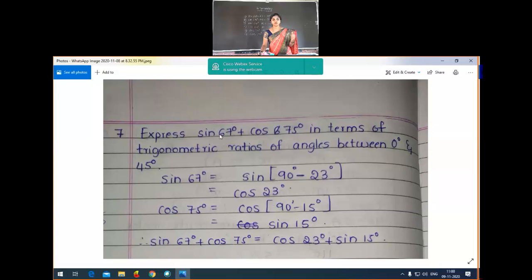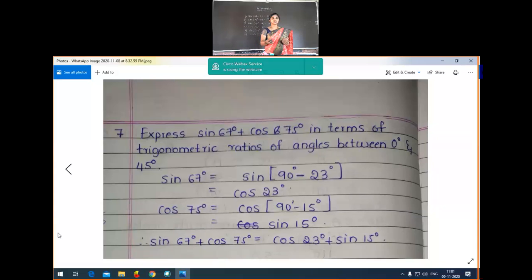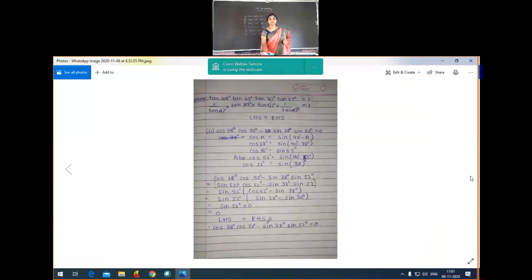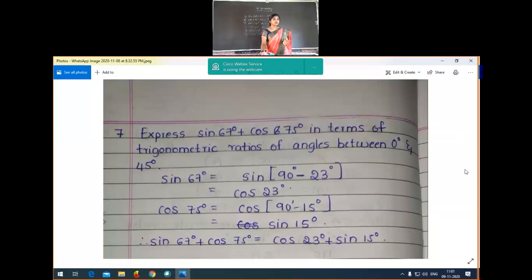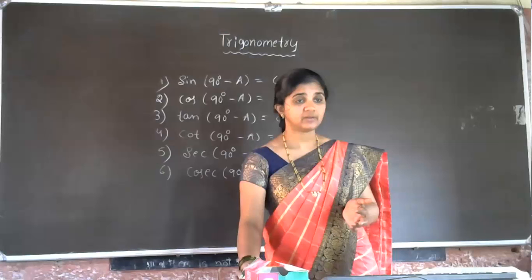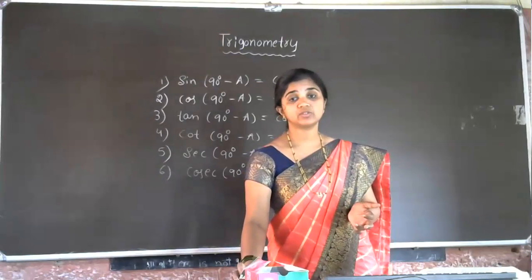So we have expressed the given trigonometric ratios in different terms: sin becomes cos and cos becomes sin, with angles 23° and 15°, both between 0° and 45°. This is the explanation part of Exercise 11.3. If you have any confusion, you can ask your doubts now.